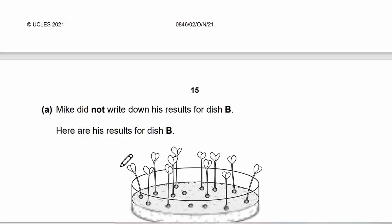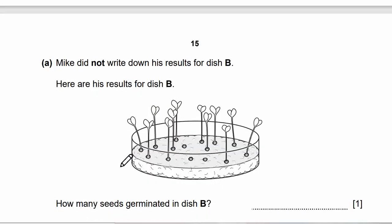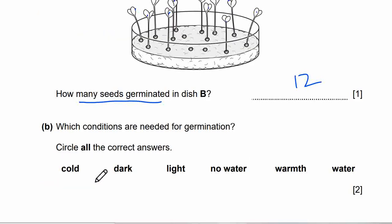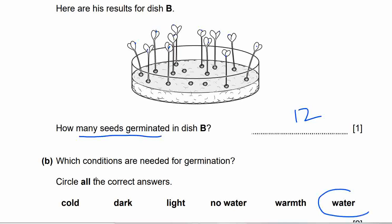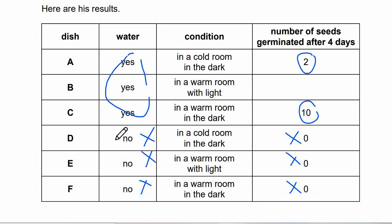Mike did not write down his result for dish B. How many seeds germinated in dish B? Counting from the diagram — it will be 12. Which conditions are needed for germination? We can see it needs water and warmth. The ones that germinate well are in the warm room with water — that's 12. While in the cold room it's only 2. So seeds need water and warm conditions to germinate.